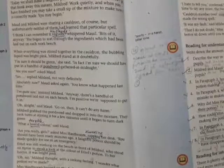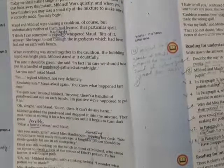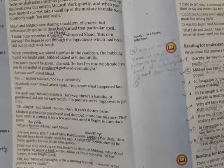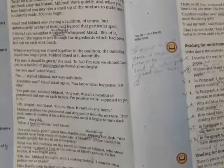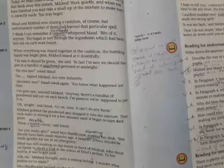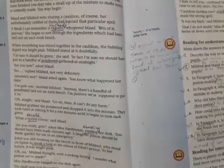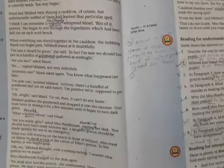'Are you ready girls?' asked Miss Hardbroom, rapping the desk. Rapping means knocking the desk. 'You should have been ready minutes ago. A laughter potion should be made quickly for use in an emergency.' Ethel was still working on the bench in front of Mildred, who stood on tiptoe to sneak a look at the color of Ethel's potion. To her horror it was bright pink. 'Sneak a look' means when you look secretly at someone or at something. 'Oh no,' Mildred thought with a sinking feeling, 'I wonder what potion we have made.'